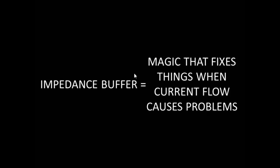Here's the way that I think of impedance buffers in my head. I think of an impedance buffer as magic that fixes things when current flow causes problems. If you remember in that last example with the two sets of resistors it was the current flow between the resistors that caused a problem. And the impedance buffer stopped that current flow and caused our output voltage to be what we expected it to be.